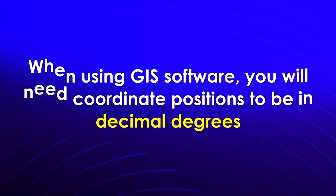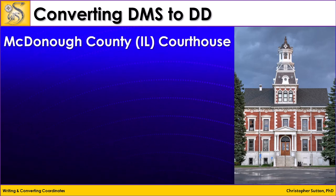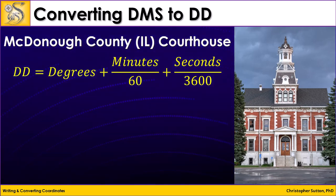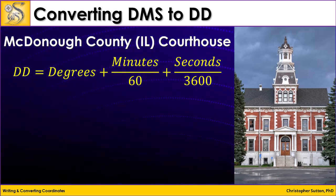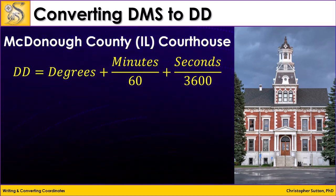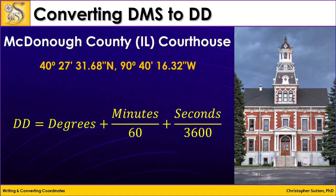So let's look at converting a DMS coordinate position to decimal degrees. Here we have the McDonough County Courthouse located in western Illinois. The process of converting DMS to decimal degrees is: decimal degrees equals degrees plus minutes divided by 60, plus seconds divided by 3600. Why? Because there are 60 seconds in a minute, and if there are 60 minutes in a degree, then 60 times 60 is 3600.